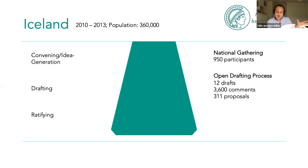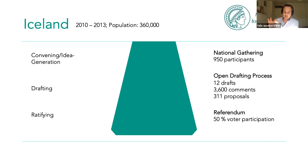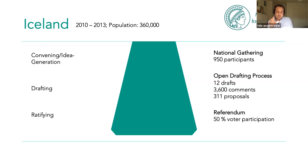Once the drafting process was over, Icelanders approved the constitution with a two-thirds majority in a non-binding referendum. But the process ground to a halt at parliament, which failed to ratify the constitutional draft. Even though the draft was not ratified and Iceland's size and homogeneous socioeconomic makeup is hardly comparable to other contexts, the Icelandic case still sets new standards for public participation in constitution making. It offered unprecedented public access to the drafting of a constitutional text, and also highlighted the importance of involving political actors and some of the shortcomings of self-selected public participation.